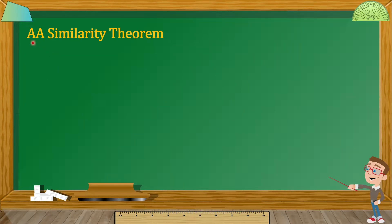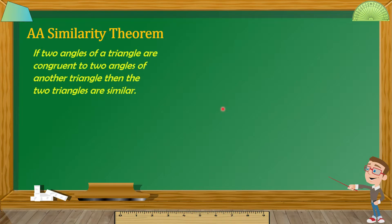So, define muna natin yung AA Similarity Theorem. AA Similarity Theorem here stands for angle-angle. Sabi dyan, if two angles of a triangle are congruent to two angles of another triangle, then the two triangles are similar.